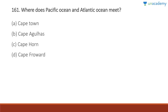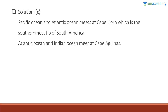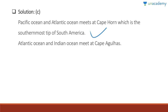Question 161: Where do the Pacific Ocean and Atlantic Ocean meet? They meet at Cape Horn, the southernmost tip of South America. Cape Horn is where the Pacific and Atlantic Oceans meet, and the Atlantic Ocean and Indian Ocean meet at Cape Agulhas.